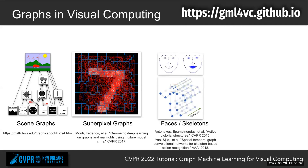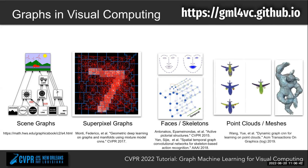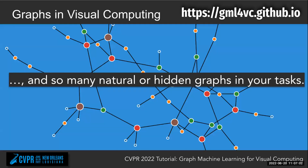In human modeling, people use graphs to represent human faces and human skeletons. In 3D vision, we have unstructured data such as point clouds and 3D meshes. People also use graph networks to work with those data by building a KNN graph or using the connectivity of nodes on a mesh. So there are lots of graph-structured data in these tasks — they may come from the nature of the data itself or there may be some hidden structure within the data. That's why we care about graph machine learning.